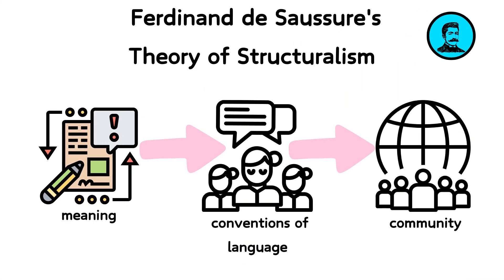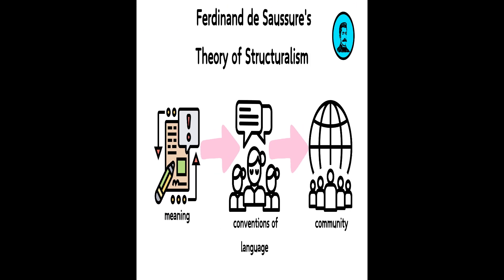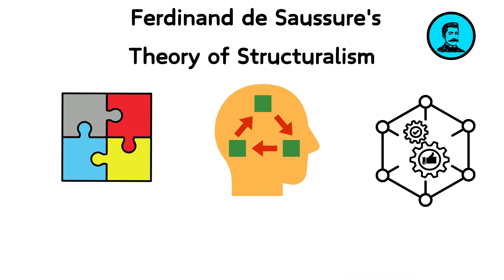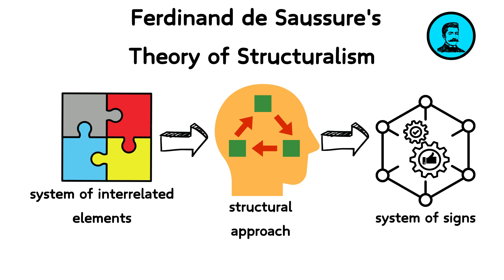This means that the meaning of words is not fixed by their nature but is established through the conventions of language used by a community. Understanding this dynamic helps us see language as a system of interrelated elements where each word's meaning is shaped by its relationship with others. This structural approach opens up ways of analyzing not just language, but any system of signs, such as mythology, fashion, and cultural norms, revealing the underlying structures of our social world.